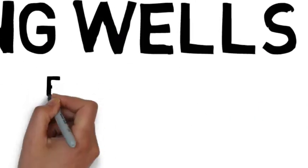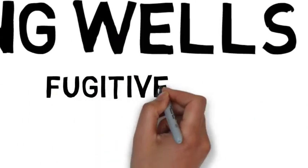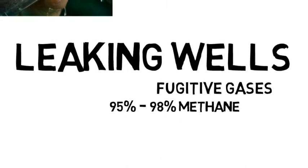The gas that can leak from wells are called fugitive gases. The issue that arises from fugitive gases is that coal seam gas in its original form is made up predominantly of methane gas. That's 95 to 98% in fact.